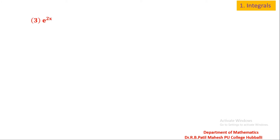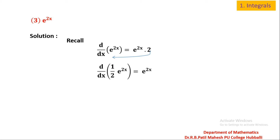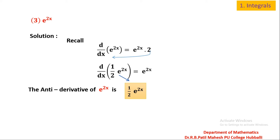Question number 3: e^(2x). Find the anti-derivative of e^(2x). Recall d/dx of e^(2x) — that is e^(2x) × 2. Taking 2 to the left side: d/dx of (1/2)e^(2x) is equal to e^(2x). So the derivative of (1/2)e^(2x) is e^(2x), and the anti-derivative of e^(2x) is (1/2)e^(2x). Try yourself: e^(3x) and e^(−2x) in the same manner. This is called the anti-derivative by inspection method.